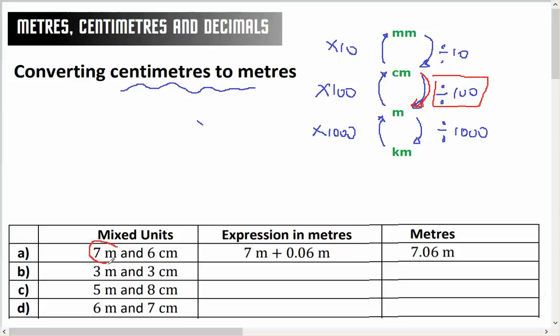This is already in metres. 6 centimetres, 6 divided by 100, 2 zeros, so I need to move the decimal point 2 spots, therefore 0.06.